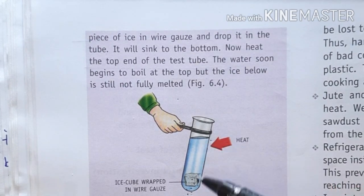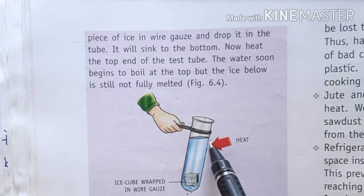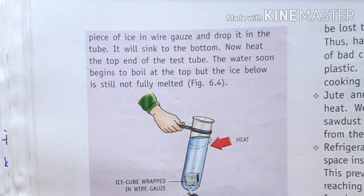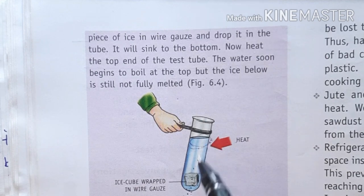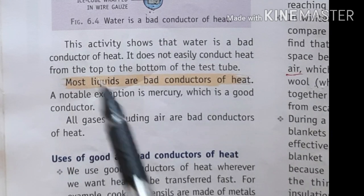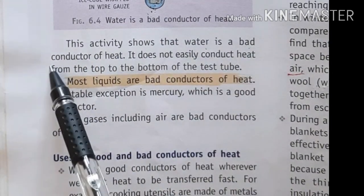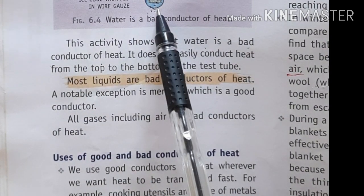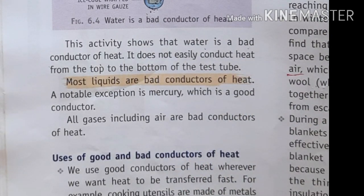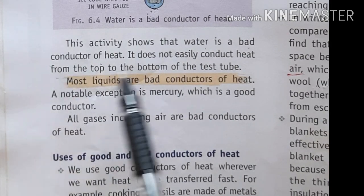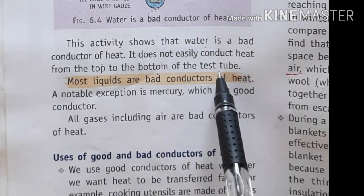This is possible because the heat at the top is not being conducted downward. If it were conducted, the temperature at the bottom would increase and the ice would melt. This activity shows that water is a bad conductor of heat and does not easily conduct heat from the top to the bottom of the test tube.